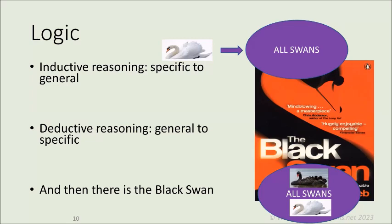For inductive reasoning: if you lived in Europe for a thousand years and were describing a swan to someone, they would immediately assume swans are white. Why? Because the only swans people had seen were white, so they went from the specific — I see lots of white swans — to a general rule: all swans are white. Then for deductive reasoning: once you've got that general rule, you see a swan in front of you and say it must be white. You use deductive reasoning all the time — if I let go of a pen in my hand, it falls to the earth, following the law of gravity. The law of gravity is a general rule applied to a specific instance, and it allows you to predict. Remember, all risk management is about predictions.